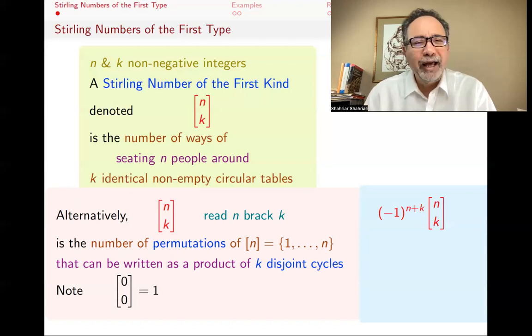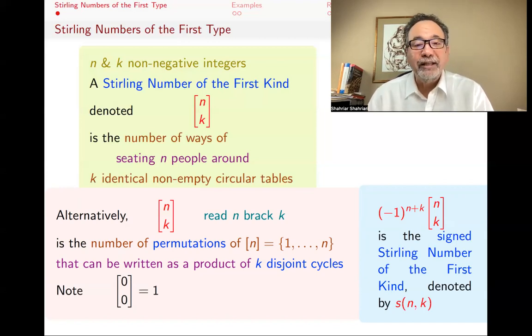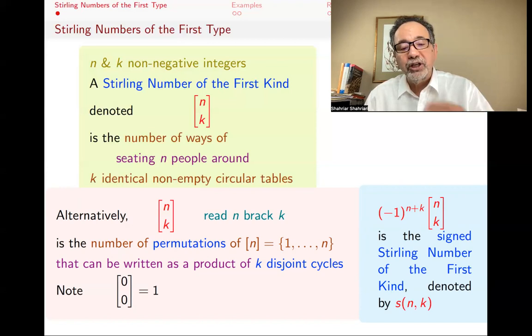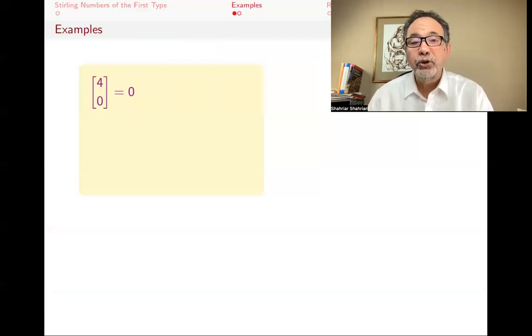Also, a notation that we will not use in this lecture at all, but we will use later, is if we add a plus or minus to these [n,k], depending on whether or not n plus k is odd or even. And when you do that, you call that a signed Stirling number of the first kind, and I denote them by little s of (n,k). Some people use different notations. They actually use little s(n,k) to denote the Stirling numbers of the first kind. But I use the little s(n,k) for the signed Stirling numbers of the first type, and [n,k] for the actual Stirling numbers of the first kind. And again, that's the number of ways of seating n people, distinct people—people are always distinct—around k identical non-empty circular tables.